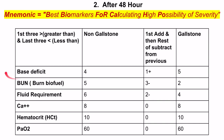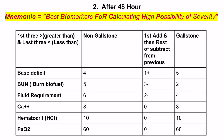For gallstone pancreatitis: for base deficit, we add one — so four plus one equals five. For other criteria we subtract: burn — five minus three equals two; fluid requirement — six minus two equals four. For calcium, hematocrit, and PO2, the values are the same as in non-gallstone pancreatitis.